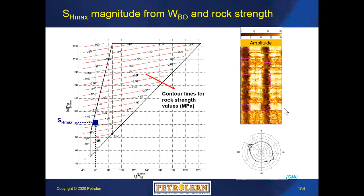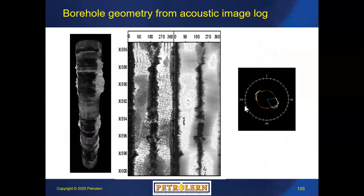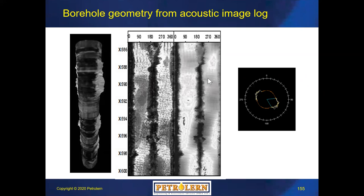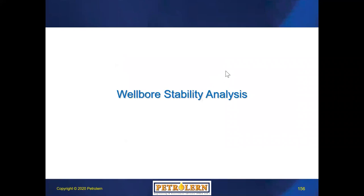Image logs are a very valuable type of data for maximum horizontal stress and stress orientation analysis. Image logs can be electrical — pad-based with some gaps in the image — or acoustic, which has full coverage of the wellbore wall, allowing easy identification of both breakouts and drilling-induced tensile fractures. The advantage of acoustic image logs is that if you calibrate the data based on distance from the center of the well, you can visualize the wellbore in 3D. With this, we are done with our geomechanical modeling.